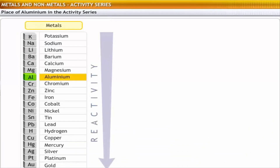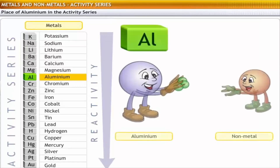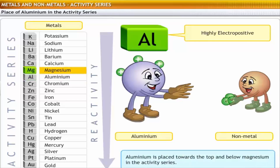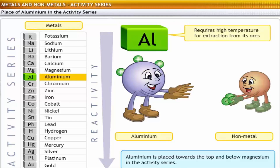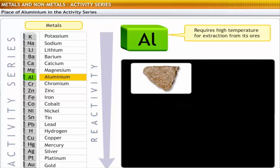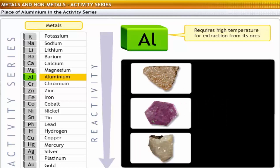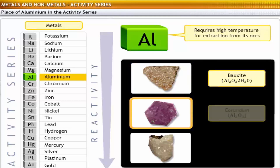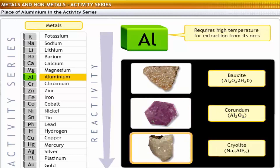Let's now take up aluminium — a well-known metal in the activity series — and analyze its properties as well as the method for its extraction. Aluminium is a highly electropositive element and so forms positive ions. Therefore, it is placed towards the top and below magnesium in the activity series. It is not viable to use carbon reduction for extraction of aluminium because the metal needs to be heated to very high temperatures. Therefore, aluminium is extracted from its ores using electrolysis. Important ores of aluminium are bauxite (Al2O3·2H2O), corundum (Al2O3), and cryolite (Na3AlF6).